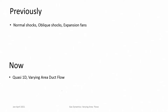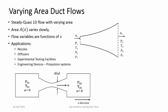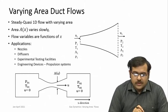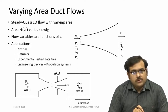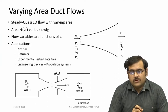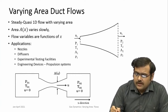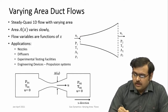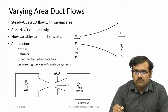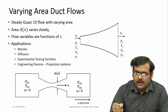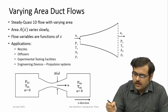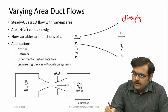When we consider varying area duct flows, we are not considering any effects of friction or any other effects like heat addition or mass addition. We are only considering that the area of the duct is changing. For the quasi-1D assumption to hold good, the area changes slowly — it is not a sudden expansion or a sudden contraction. A gradual change in area is represented in this figure, where area slowly increases — this is a diverging duct.